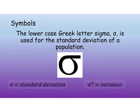Our symbol is the Greek letter sigma, lowercase, and this is used for the standard deviation of a population. So sigma equals the standard deviation, which means sigma-squared equals the variance.